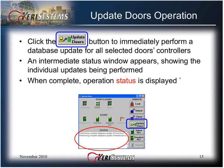The Update Doors operation will do a selective total update to only those doors that have been selected. Click the Update Doors button to immediately perform this database update for all selected door controllers. An intermediate status window appears showing the individual updates being performed. When complete, the operation status is displayed. This operation performs a total update to selected controllers only — it is very useful after a controller has been RAM reset and needs to have the database restored.